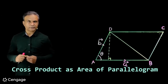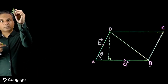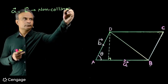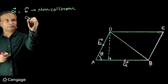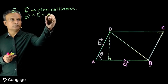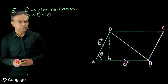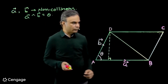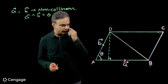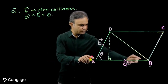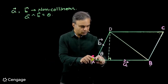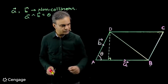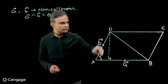Consider two non-collinear vectors A and B. Suppose the angle between vectors A and B is theta. With these two non-collinear vectors we can construct a parallelogram or triangle. Here we have a parallelogram formed by two non-collinear vectors A and B. Side AB is vector A, side AD is vector B, and the angle between vectors is theta.